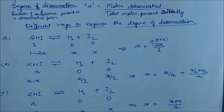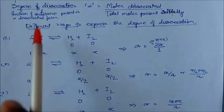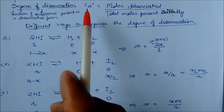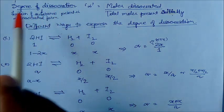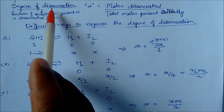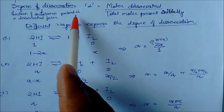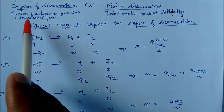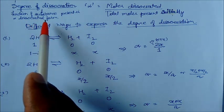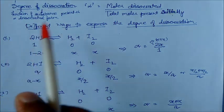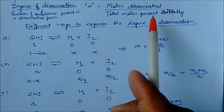In this lecture we will see and understand what is the meaning of degree of dissociation. Degree of dissociation is represented by alpha, and it is the fraction of substance present in dissociated form — that is, moles dissociated divided by the total moles present initially.